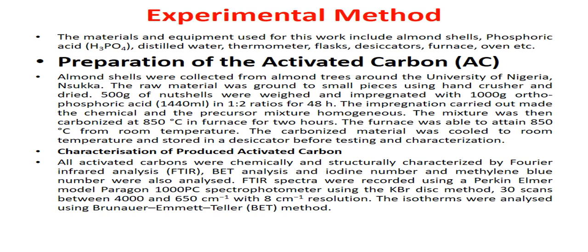Characterization of the produced activated charcoal: all activated charcoal samples were chemically and structurally characterized by FTIR, BET analysis, iodine number, and methylene blue number. FTIR spectra were recorded using a Perkin Elmer Model Paragon 1000 PC spectrophotometer using the KBr disk method, scanned between 400 and 4000 cm⁻¹ with 8 cm⁻¹ resolution. The isotherms were analyzed using the BET method.